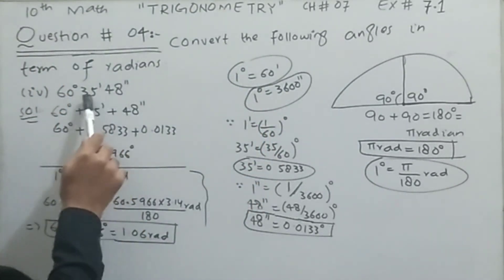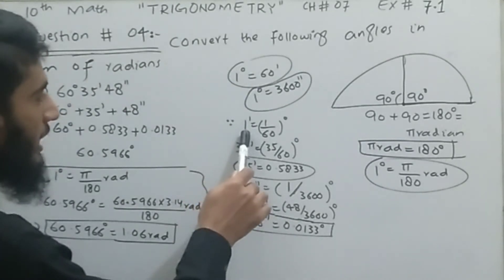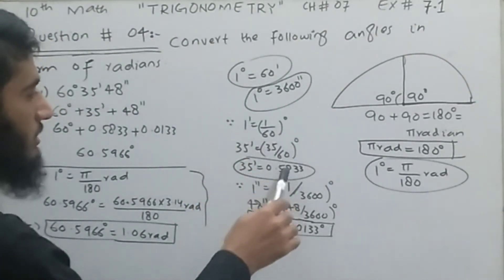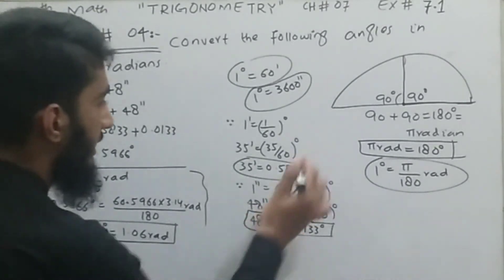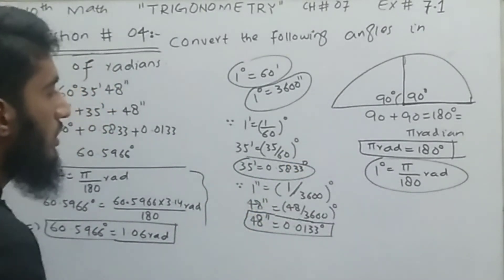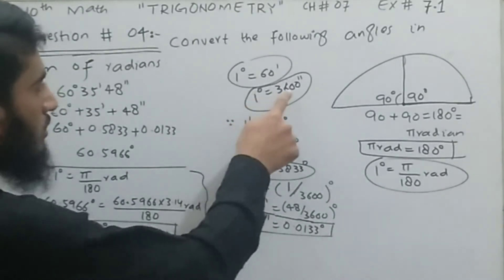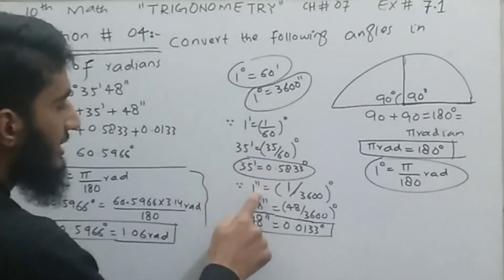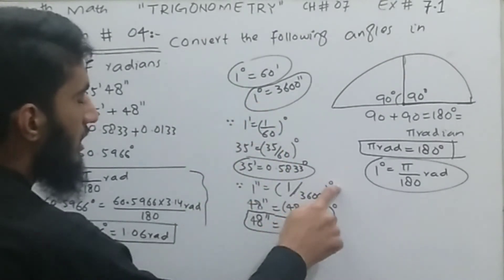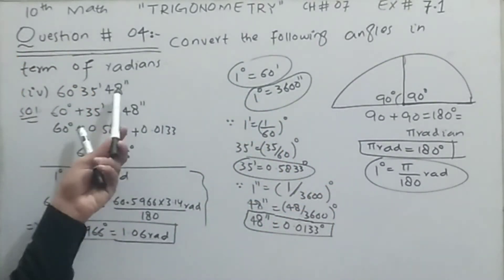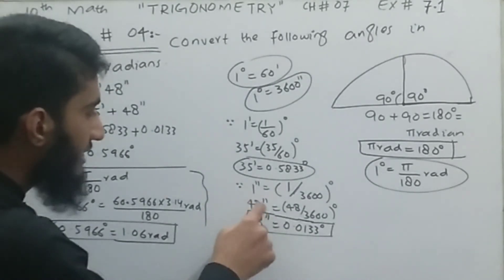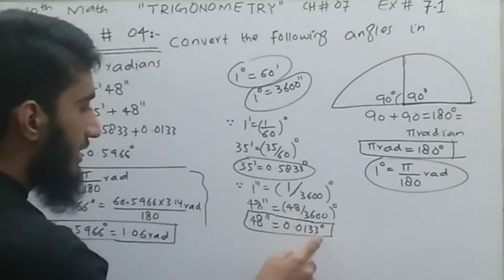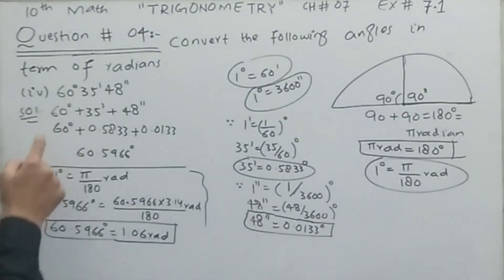Dividing both sides of the minute relation by 60 gives one minute equals 1/60 degree. For 35 minutes, multiplying by 35 gives 35/60 = 0.5833 degrees. For seconds, dividing the seconds relation by 3600 gives one second equals 1/3600 degree. For 48 seconds, multiplying by 48 gives 48/3600 = 0.0133 degrees.